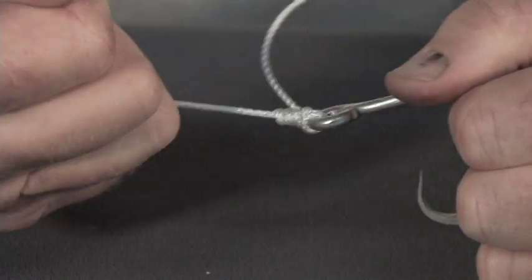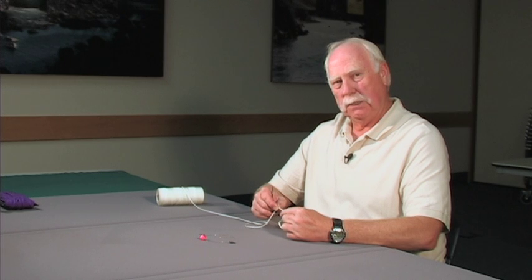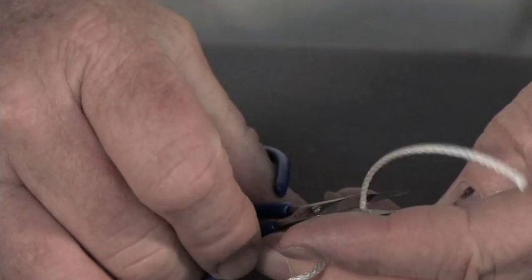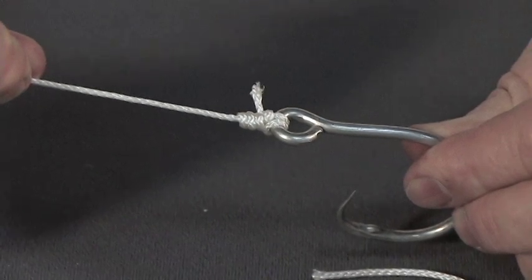Then you tighten up both ends and cut off the end. When you tighten that knot up, it's best if you wet it, so most people will just stick it in their mouth for a second and put a little saliva on it to help the knot slip so it doesn't get hot and weaken the line. And there's the improved clinch knot.